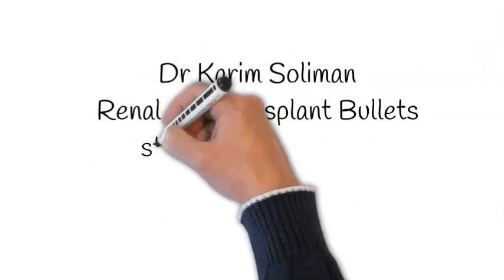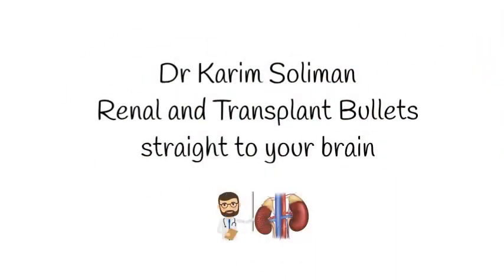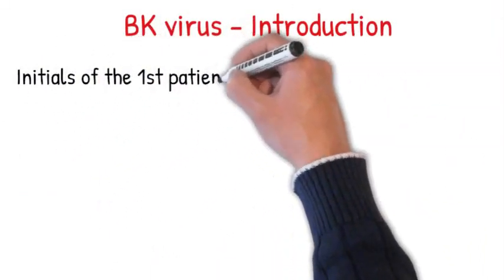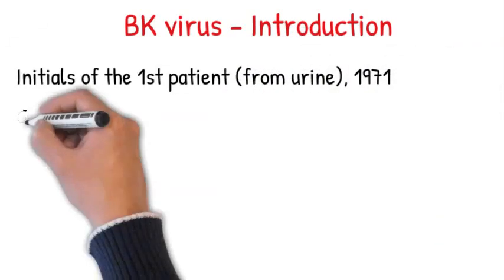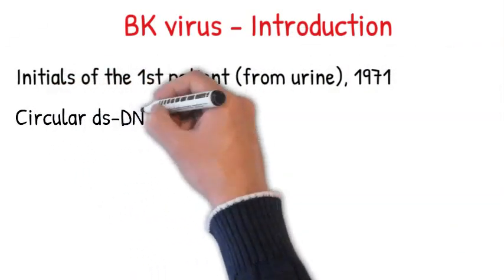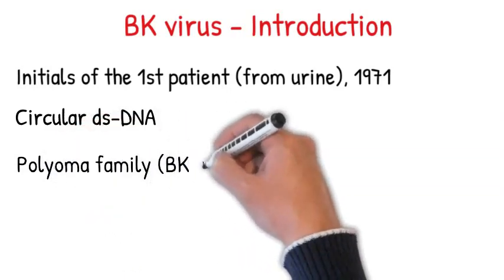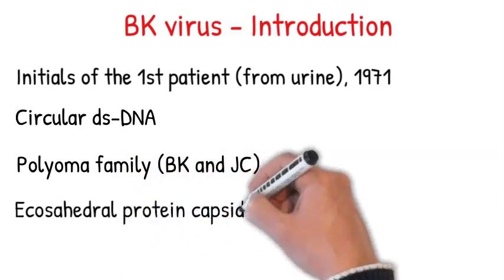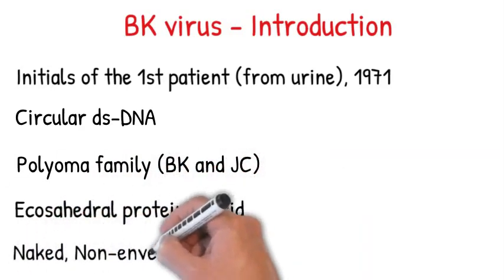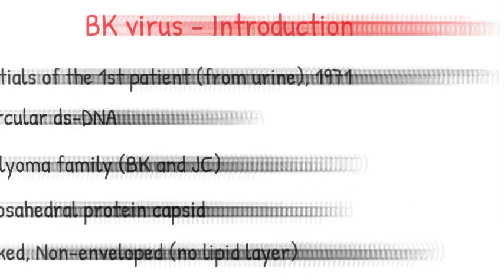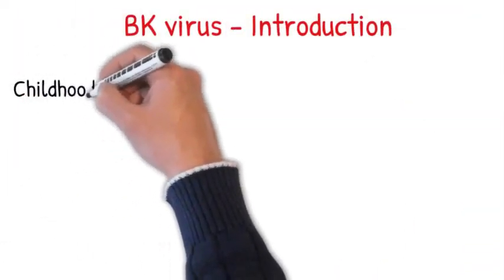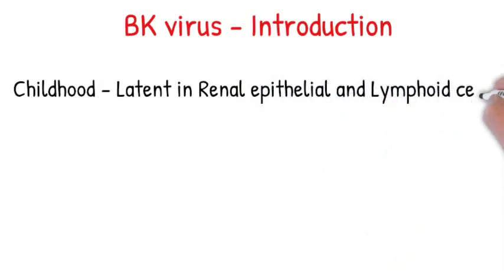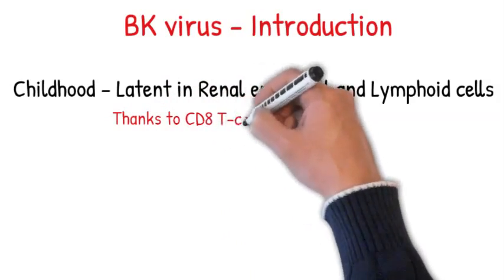Welcome back to renal and transplant bullets, straight to your brain. BK stands for the initials of the patient from whom it was isolated in 1971. It's a circular double-stranded DNA virus and, along with JC virus, both belong to the polyomavirus family. It has an icosahedral protein capsid and despite that, it's called a naked non-enveloped virus due to lack of a lipid layer. We may catch the virus during childhood, but it remains latent in the renal epithelial and lymphoid cells, thanks to our immune system — particularly CD8 T cells.